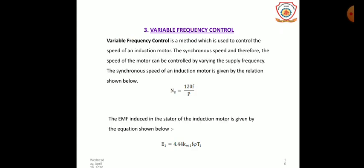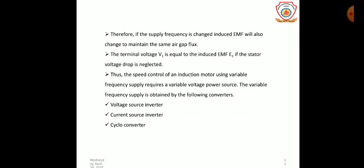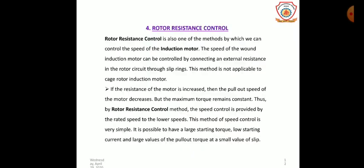The variable frequency control method controls the speed of an induction motor by varying the supply frequency. Since Ns = 120f / P, and the EMF induced in the stator E1 = 4.44 × k × w1 × f × Φ × T1, if the supply frequency is changed, the induced EMF is also changed. Variable frequency supply is obtained by the following converters: voltage source inverter, current source inverter, and cycloconverters.